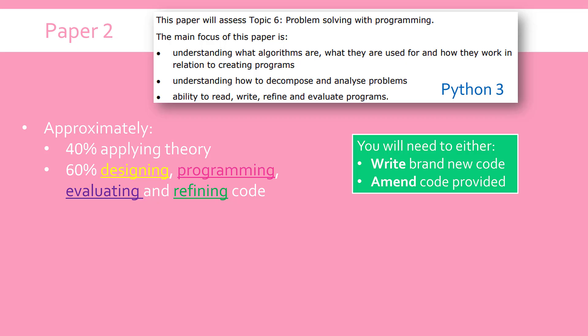There are two command words which are only going to be used in Paper 2: 'write' and 'amend'. All of the content and buzzwords fall under these two command words in the question. If it says 'write', you're going to add some brand new code. If it says 'amend', you're going to change, possibly delete, possibly improve some of the code they will give you. EdExcel have said there are going to be six questions in Paper 2, ranging from 5 up to 15 marks. Unlike Paper 1, there are not going to be lots of parts within each of these big questions, but it's not all or nothing — you can still gain marks just from doing bits like good design or adding comments.